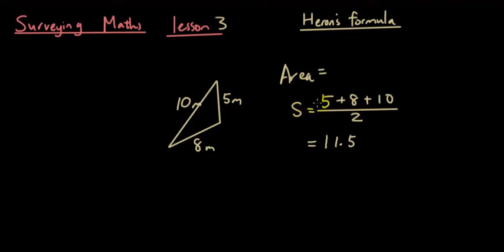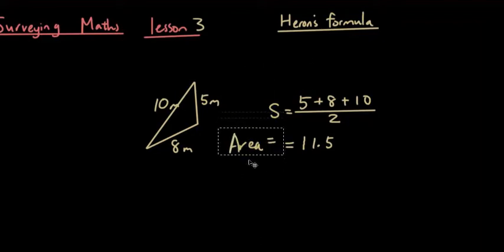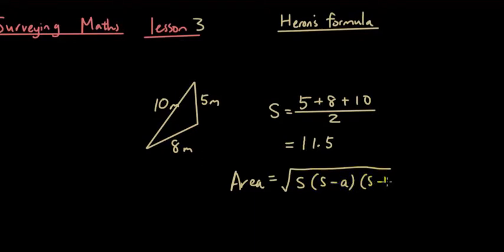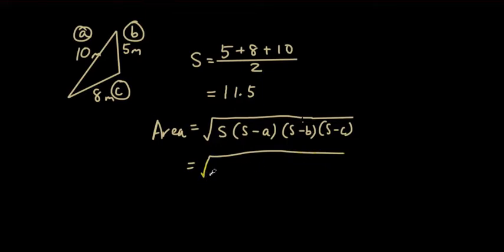Once you have found s, the area of this triangle is equal to a big formula — but it's a lot easier than it looks. It's the square root of s times (s minus a) times (s minus b) times (s minus c). It looks hard but it's quite easy. You simply substitute the numbers for s and for a, b, and c into this formula. A, b, and c can be assigned whichever way — it doesn't matter.